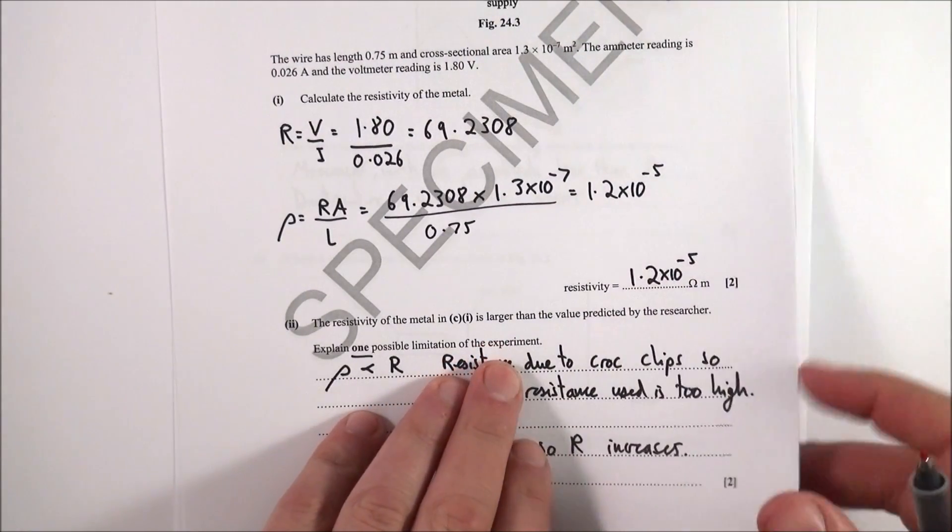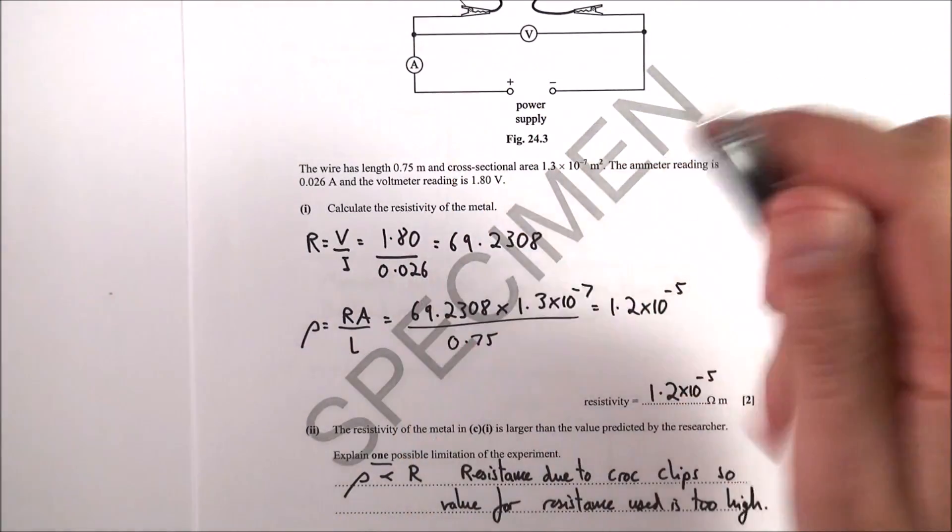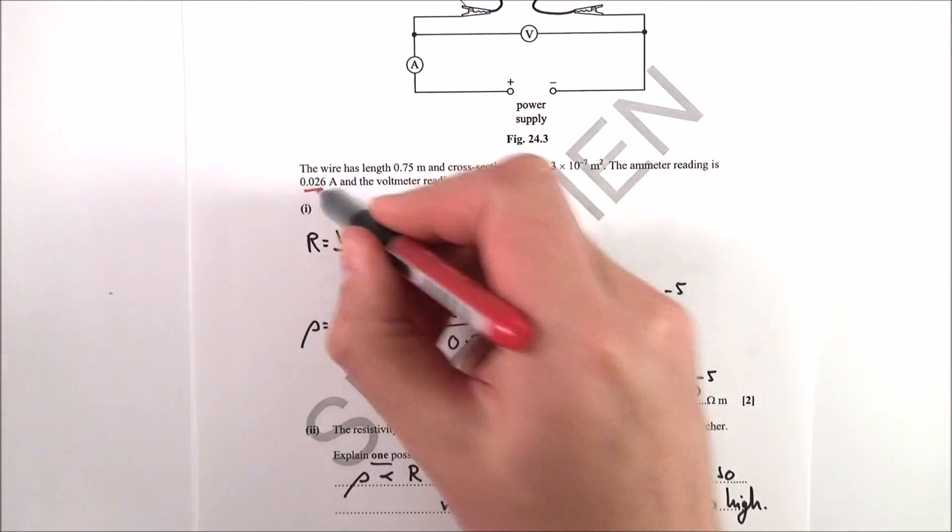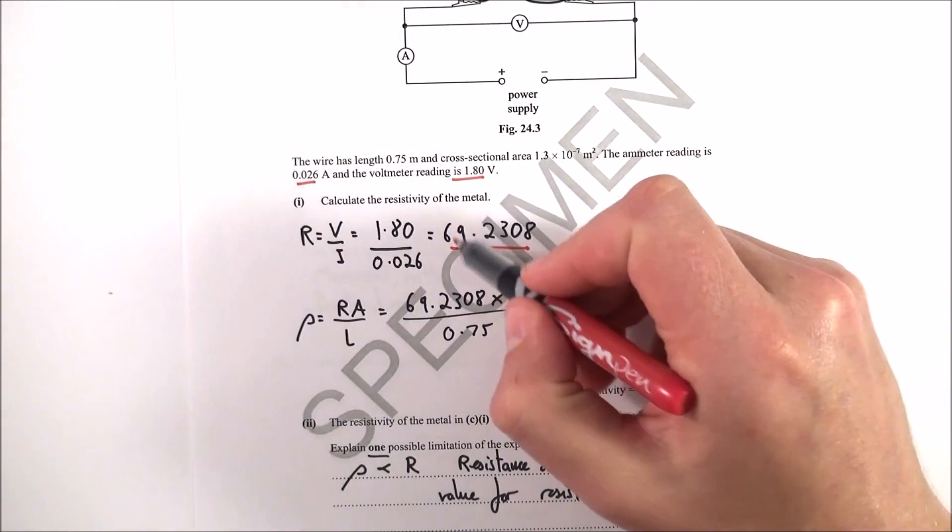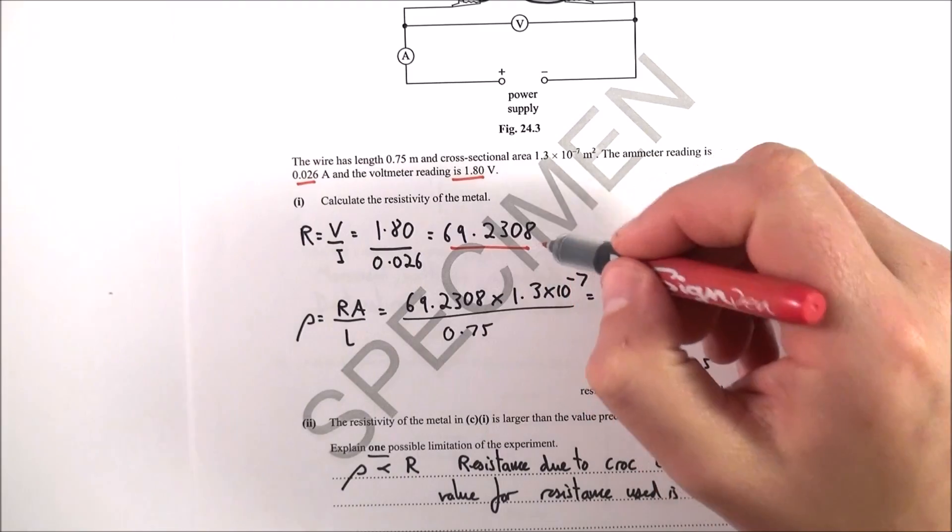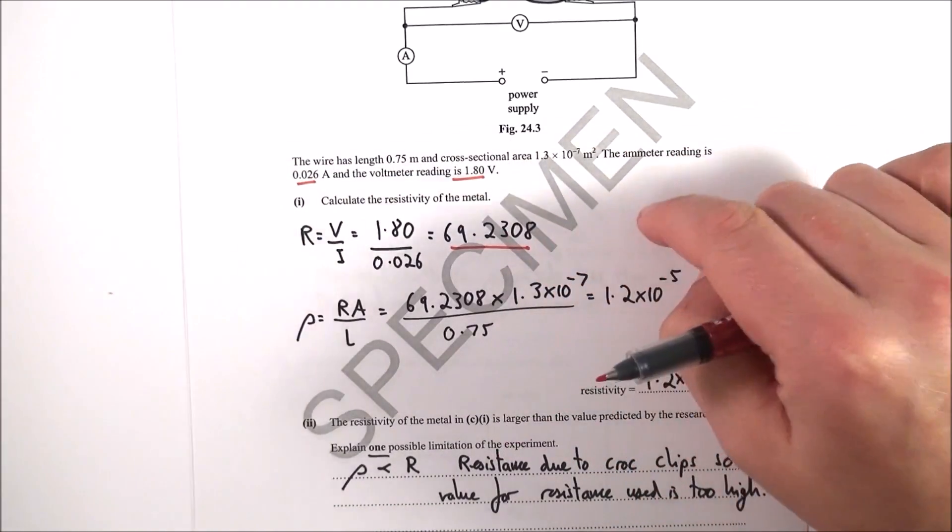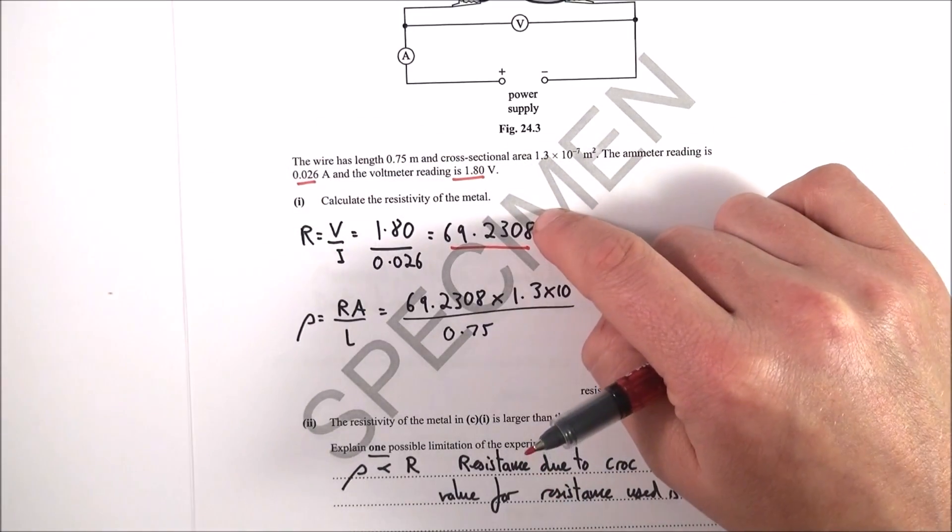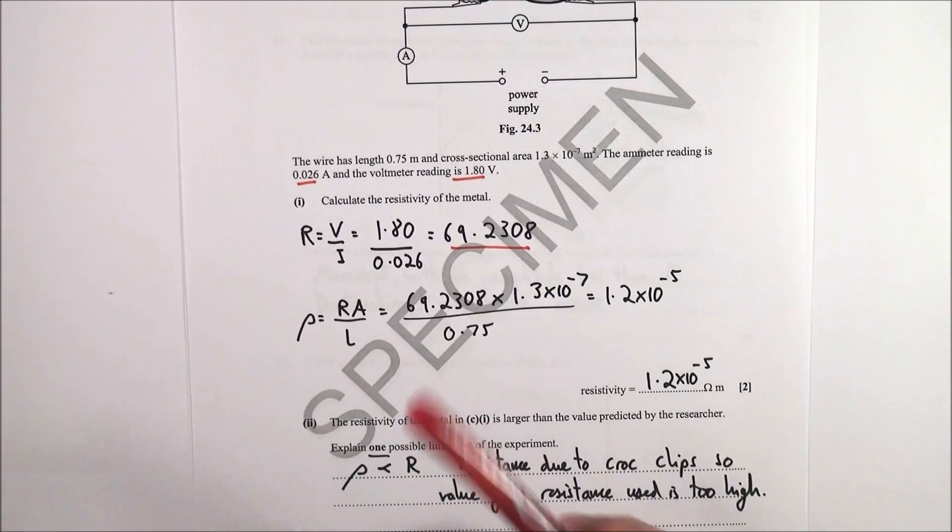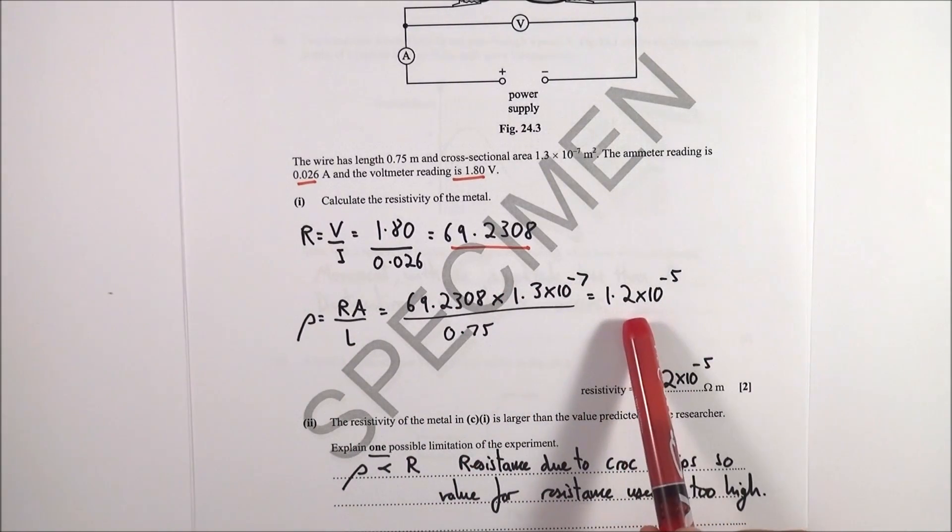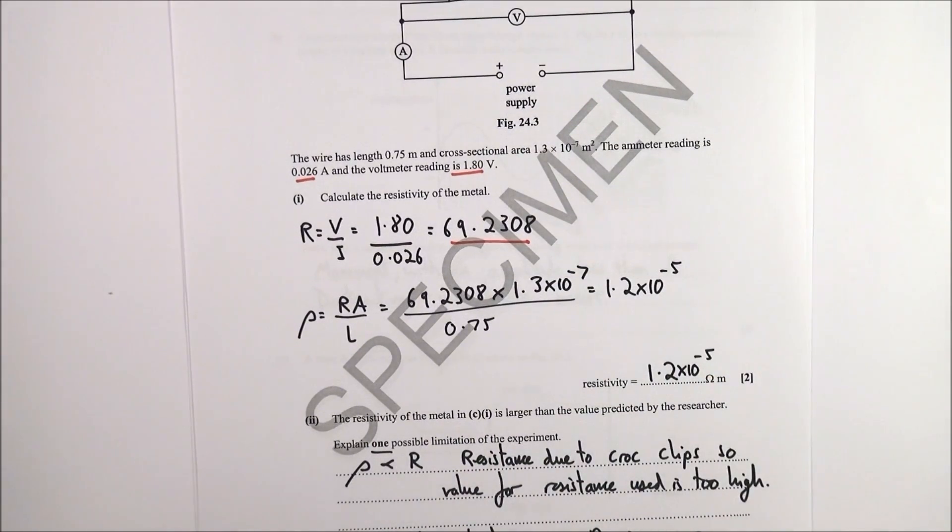Okay, this one here, again a bit of a multi-step calculation. First of all we want to know the resistivity, so you've got things like the current and the potential difference so you can work out the resistance. You must always leave this to all the significant figures in your calculator. You might write down an intermediate answer, but make sure you always put all the significant figures or keep them in your calculator or store them in the memory. Then resistivity equals RA over L, put the numbers in, and you get a value of 1.2 times 10 to the minus 5 ohm meters.